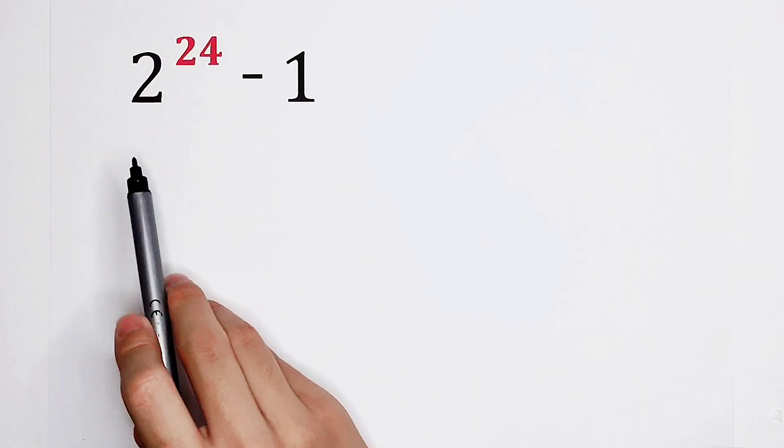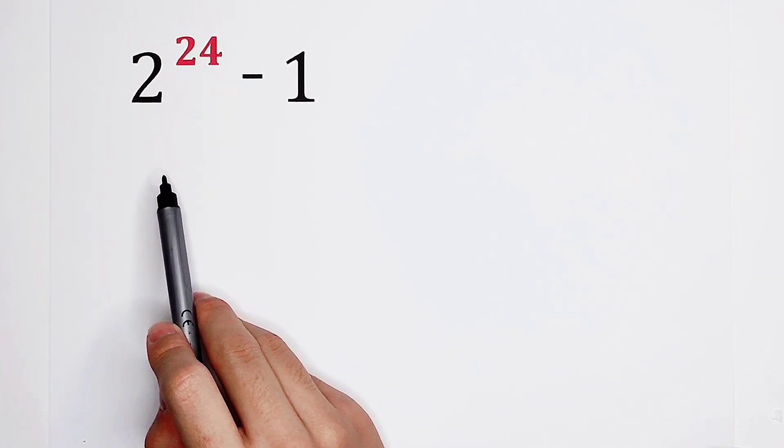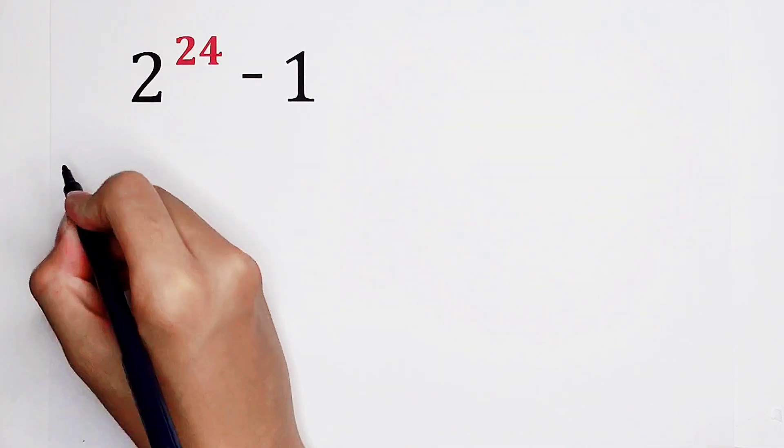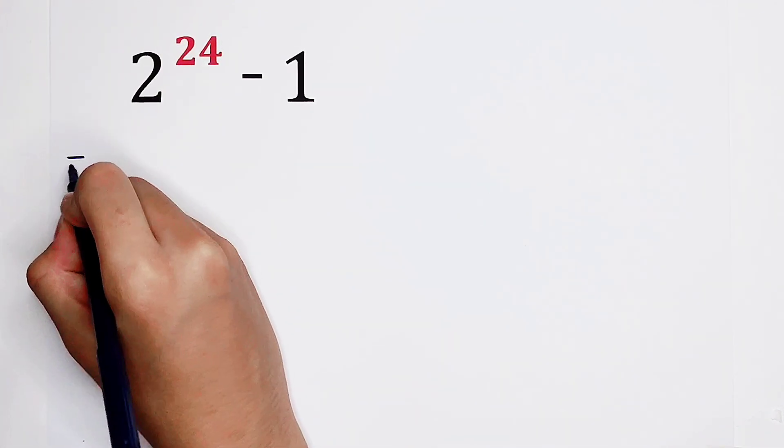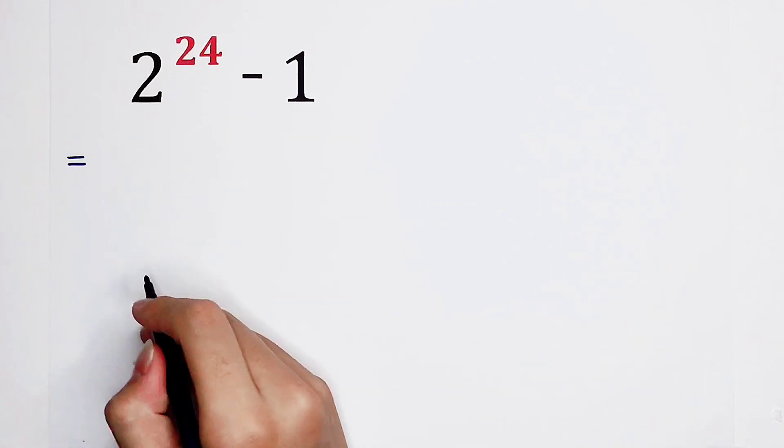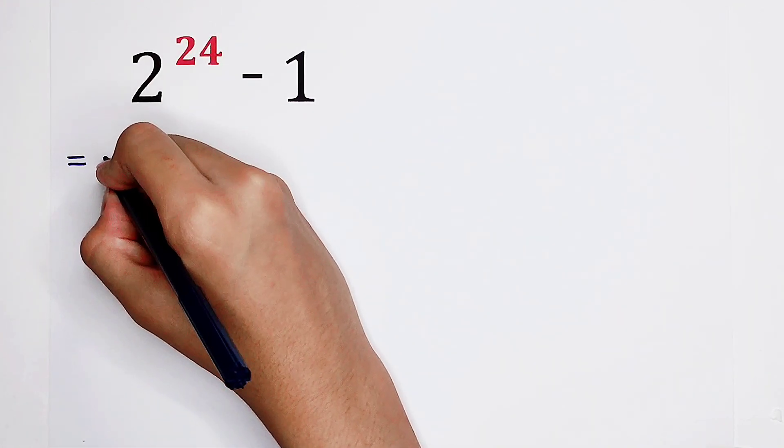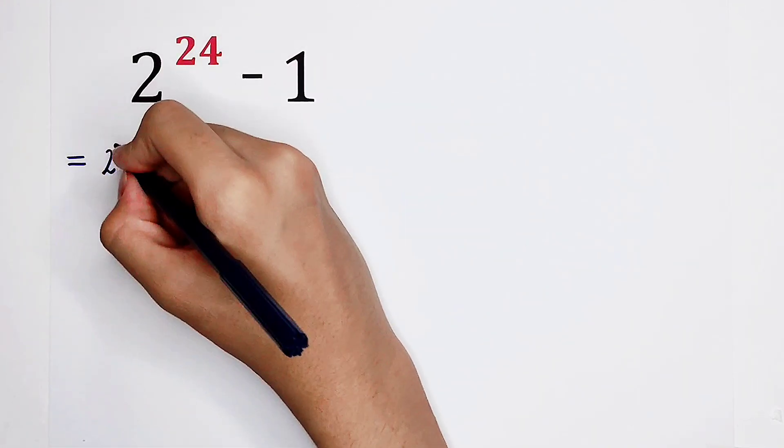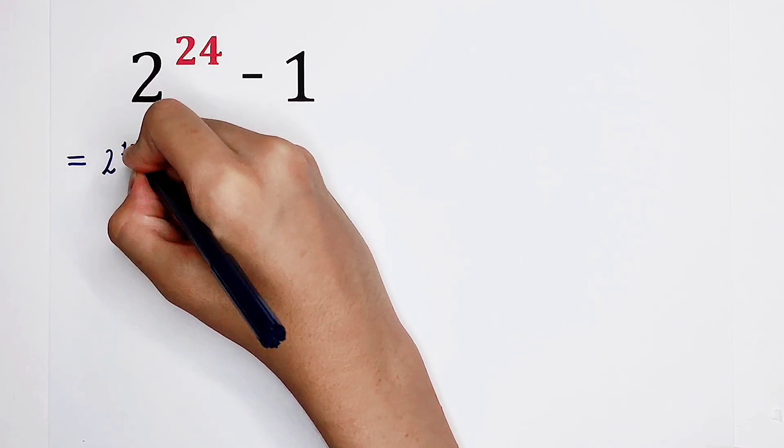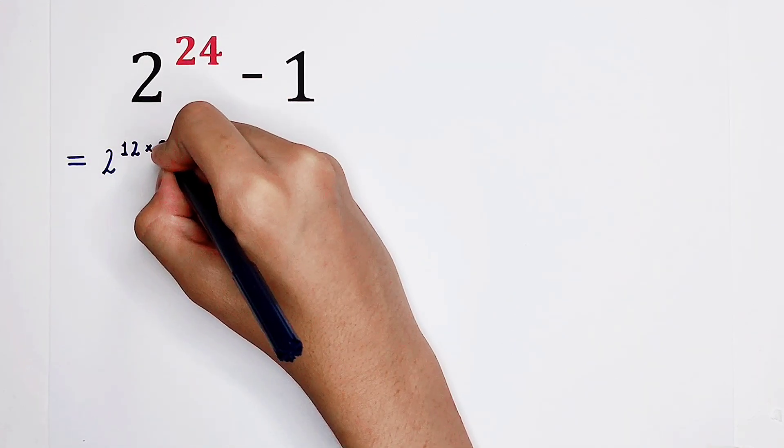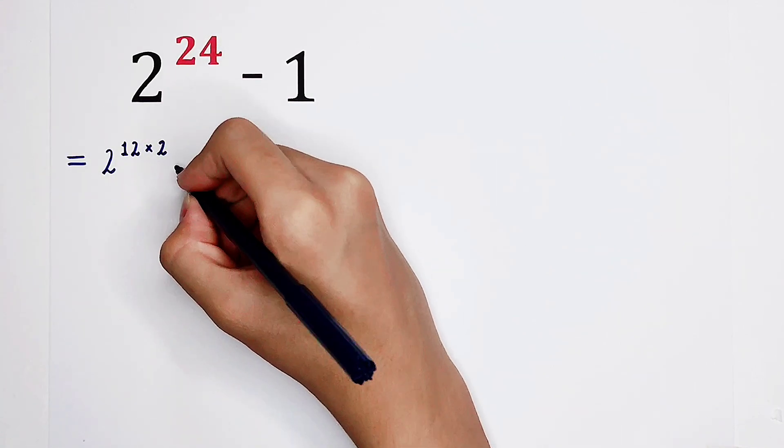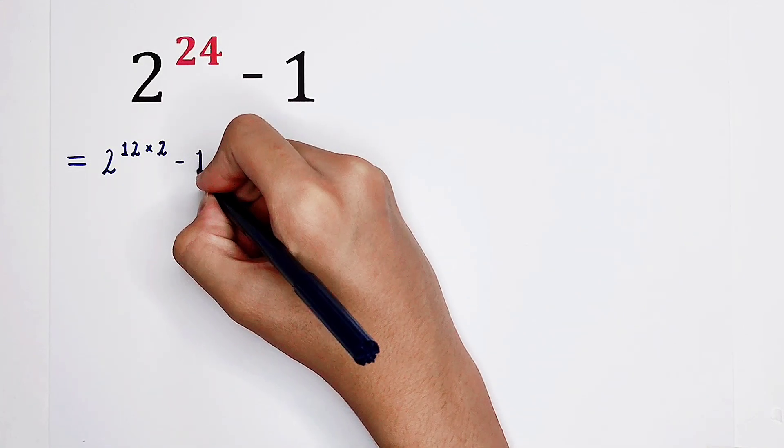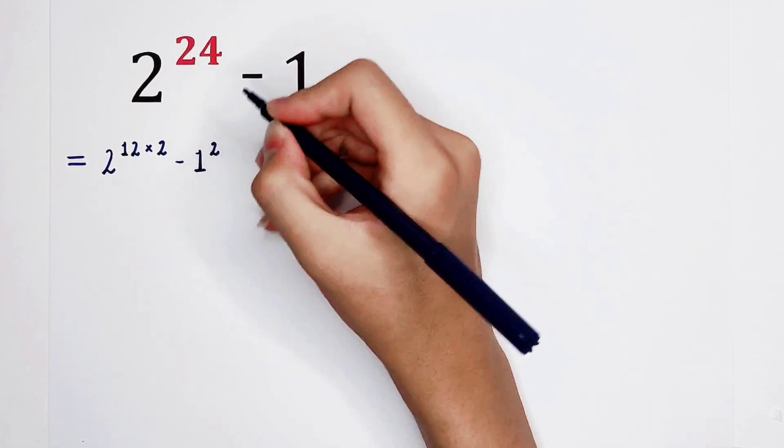And 2 to the power of 24 as well. So that's a benefit. This 2 power of 24 can be written as 2 to the power of 12 times 2. This 1 can also be written as 1 squared. We can use a formula.